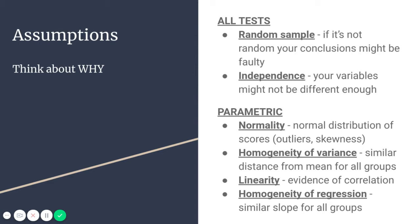For parametric tests, you have some additional assumptions. Normality refers to the normal distribution of scores, where you're looking for outliers that are very different from the mean, or skewness or kurtosis — an imbalance where it's not a bell curve. For example, if you're testing depression scores and a large percentage of your sample scored a zero, then it's going to be very hard for you to compare means or analyze variance in that case.